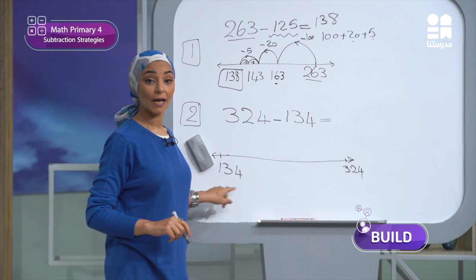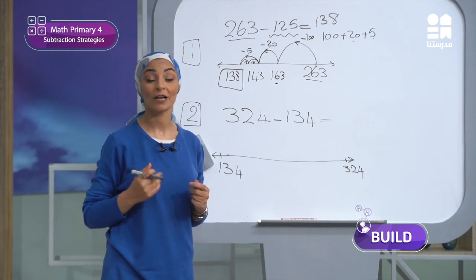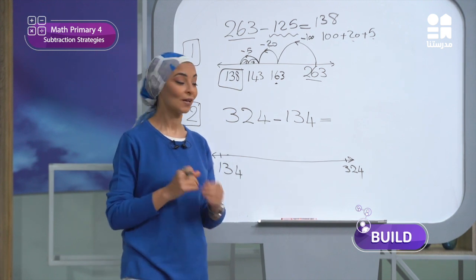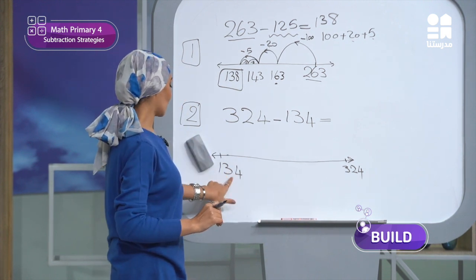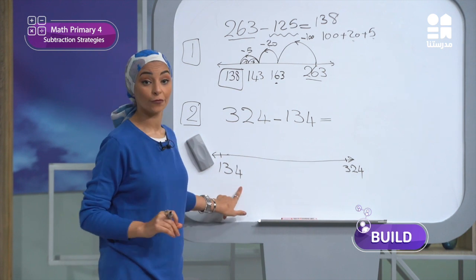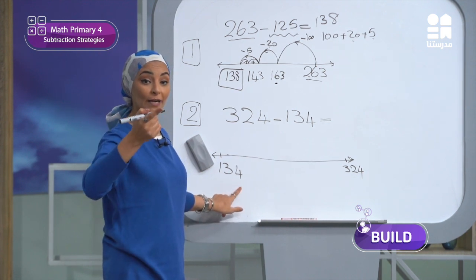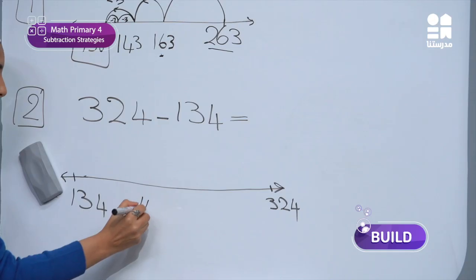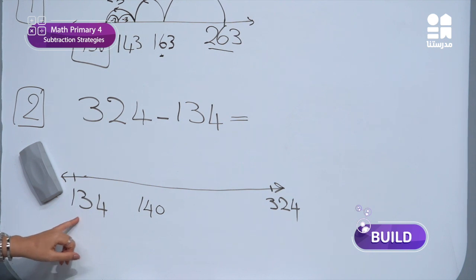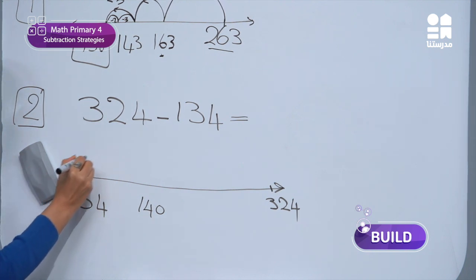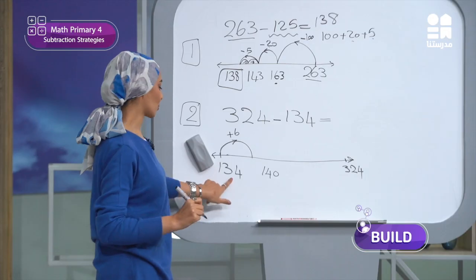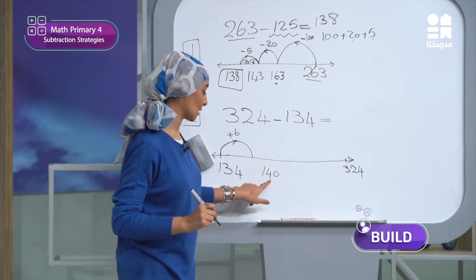To use this strategy, I will use benchmark numbers — friendly numbers. Here I have 134. The first benchmark is 140. I will add only 6 to reach 140. So I jump plus 6, and 134 plus 6 gives me 140.